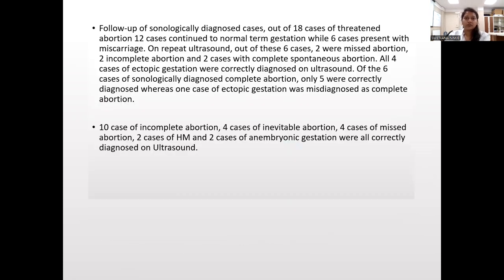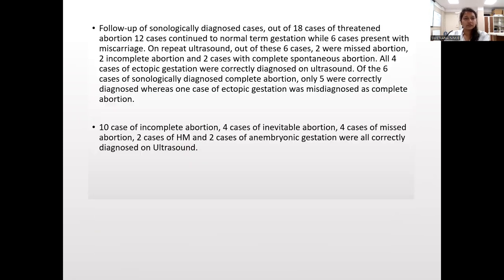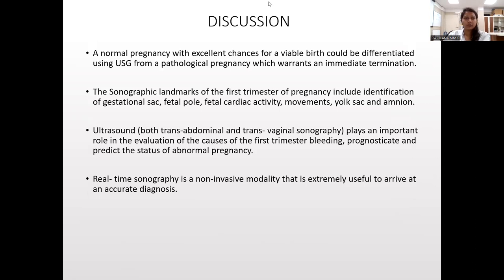Follow-up of sonologically diagnosed cases: Out of 18 cases of threatened abortion, 12 cases continued to normal term gestation while 6 presented with miscarriage. On repeat ultrasound, out of these six cases, two were missed abortion, two incomplete abortion, and two cases had complete spontaneous abortion. All four cases of ectopic gestation were correctly diagnosed on ultrasound. Out of six cases sonologically diagnosed as complete abortion, only five were correctly diagnosed whereas one ectopic gestation was misdiagnosed as complete abortion. Ten cases of incomplete abortion, four cases of inevitable abortion, four cases of missed abortion, two cases of hydatidiform mole, and two cases of anembryonic gestation were all correctly diagnosed on ultrasound.